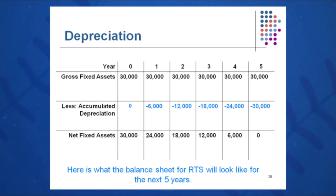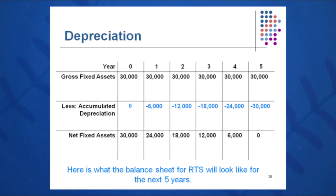Net fixed assets — or net property, plant, and equipment — is what's left after subtracting accumulated depreciation. At time zero, the truck is $30,000 gross PP&E less zero depreciation, equaling $30,000 net. By end of year one, it's $30,000 gross less $6,000 accumulated depreciation, for a net fixed asset value of $24,000. By year five, you should have $30,000 of accumulated depreciation and zero net book value for that item, confirming the depreciation was done correctly.